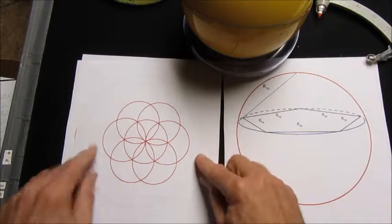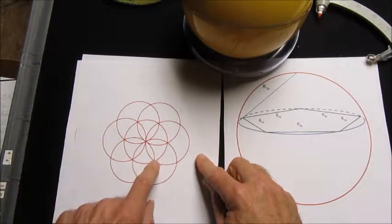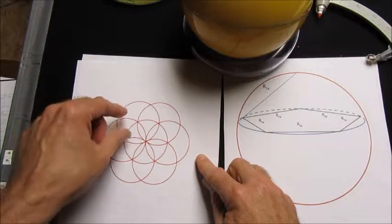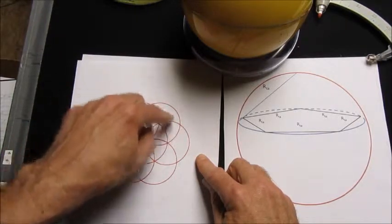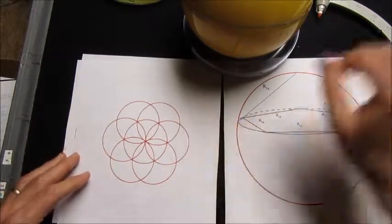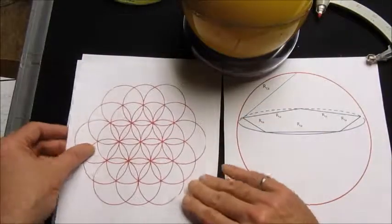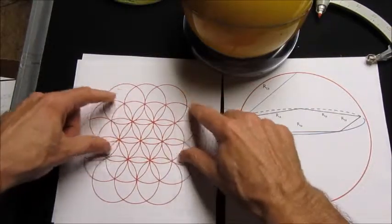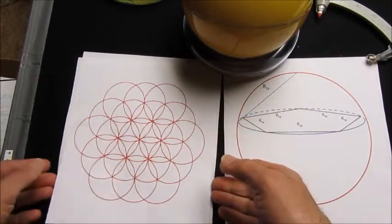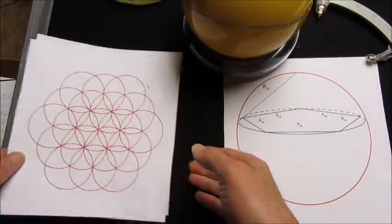Once we have a circle on a plane that has its inscribed hexagon, we can move the compass and draw additional circles around the perimeter of that circle and create what's called a flower of life pattern. In fact, that can continue to grow as more circles are added centered at intersection points of circles.